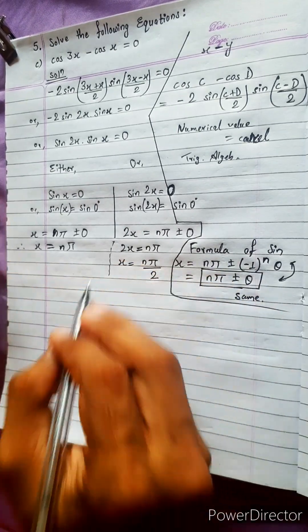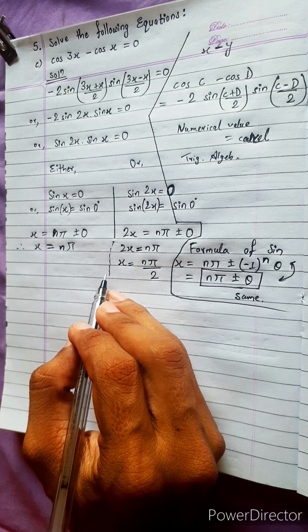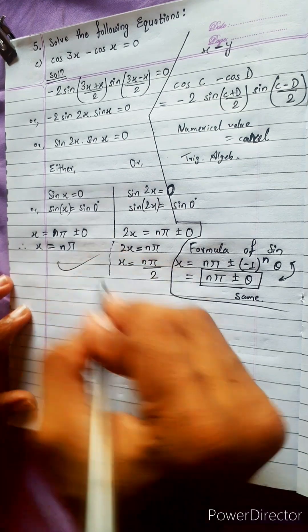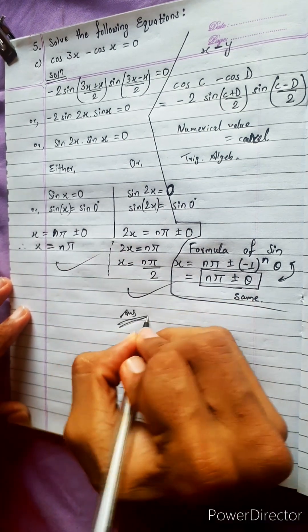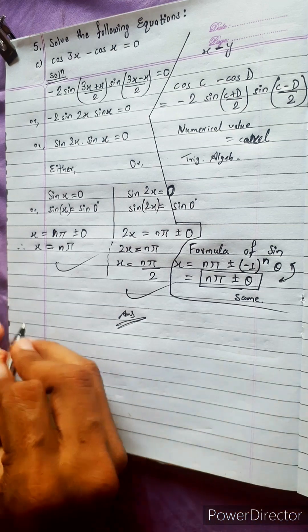Let's check the answers: n pi and n pi by 2. Both are correct. Now time to do the next question.